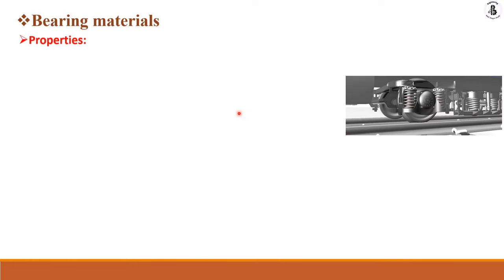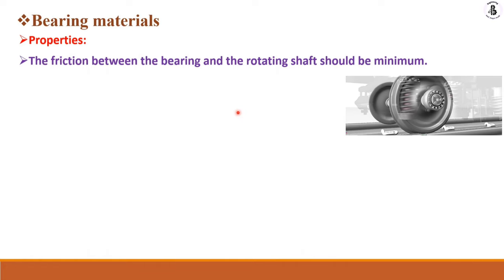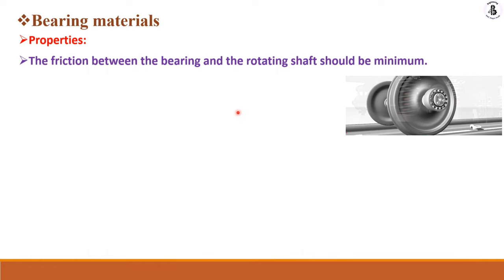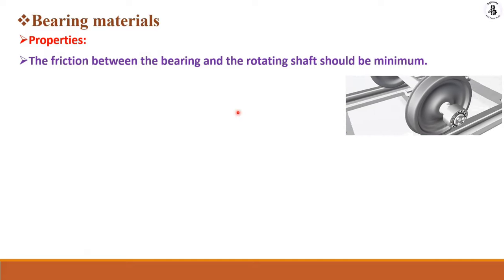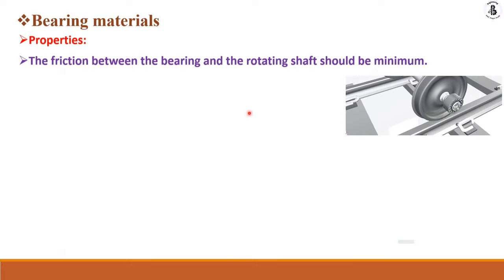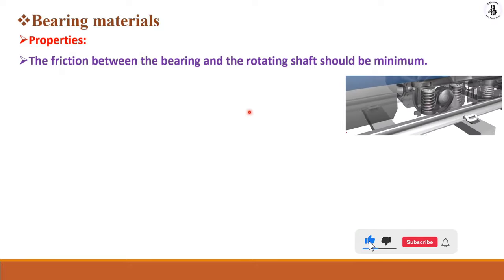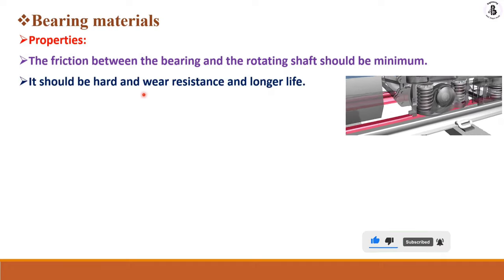Bearing materials should have properties like the friction between the bearing and the rotating shaft should be minimum. That is the basic requirement. You should select materials that have lower friction for free motion. It should be hard and wear resistant for longer life.